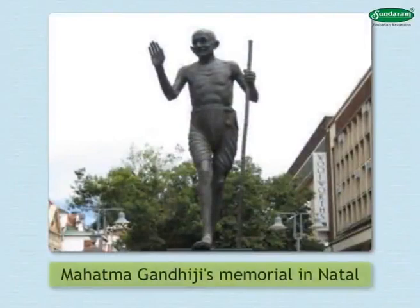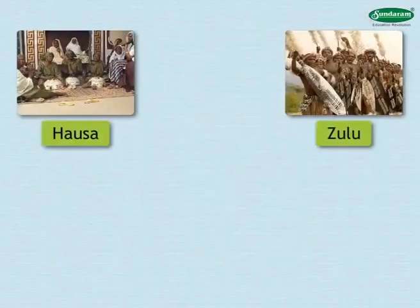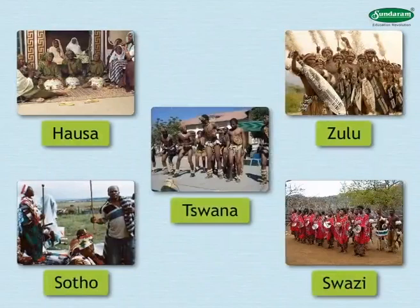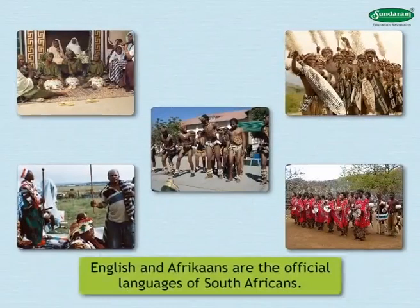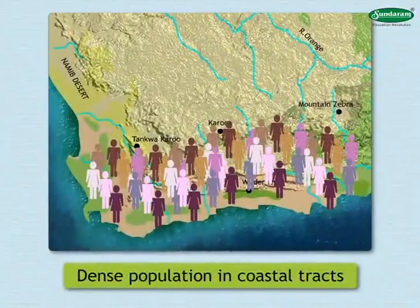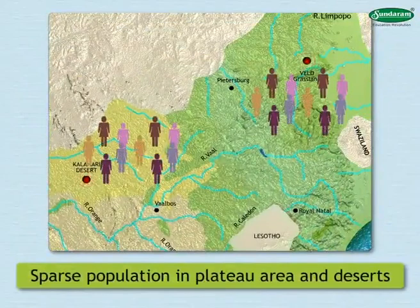Tourists pay a visit to Gandhiji's memorial in Natal. About 76% of South Africa's population is of the Negroid race. Hausa, Zulu, Swazi, Sotho, and Tswana are the main tribes. English and Afrikaans are the official languages. The coastal tracks have very dense population, while the plateau and desert areas have a sparse population.